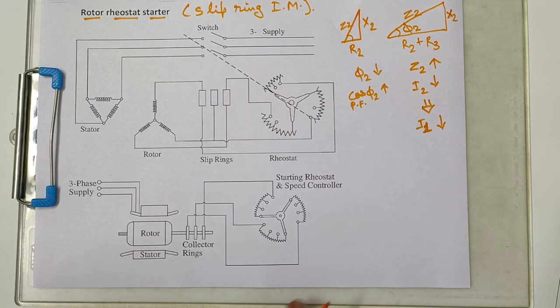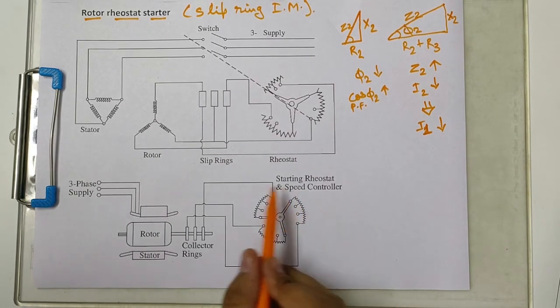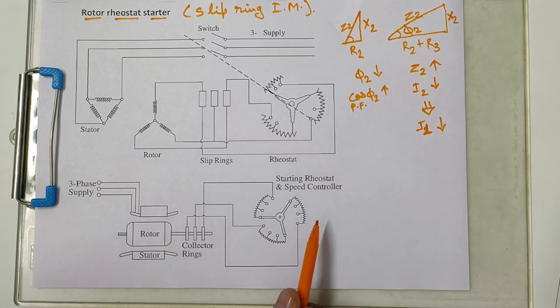When we start the motor we keep the value of this resistance high. We get a good power factor, high starting torque and low starting current. Then we keep changing this terminal and gradually keep reducing the value of the resistance. Eventually when the motor reaches its rated speed we will cut out the external resistances and short circuit the windings.